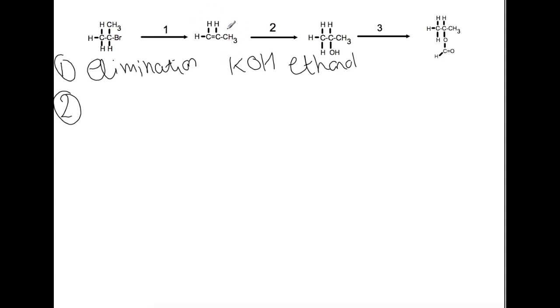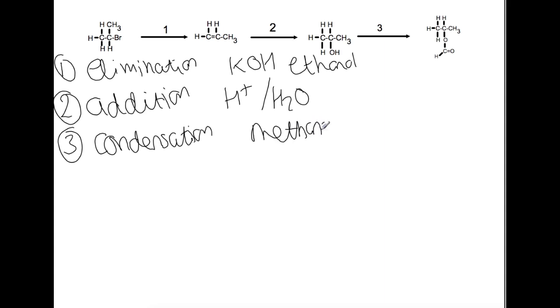Step number two we're going from an alkene to an alcohol. So this is an addition reaction. Specifically this is the acid catalyzed hydration reaction. So for this you will use H plus and water. And the final step we're going to an ester. So this is going to be a condensation reaction. To create this ester you're going to need methanoic acid and concentrated sulfuric acid as a catalyst.